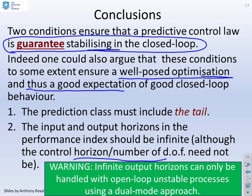Now there's a warning here, something we might discuss in a later chapter. If you have an open-loop unstable process, then you can't just willy-nilly use an infinite output horizon because your predictions may be divergent. So in that particular case, you have to use a dual-mode approach. You have to first stabilize before you predict. All right. Thank you.